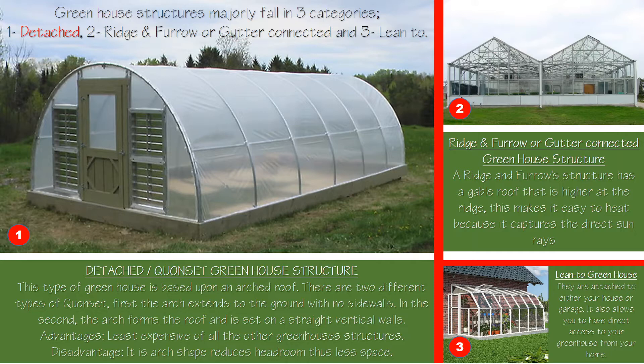Category two is the ridge and furrow, or gutter connected greenhouse structure. It is characterized by ridges, and has a gable roof that is much higher than the ridge, creating a good advantage for heat to accumulate as they capture the direct sun rays.